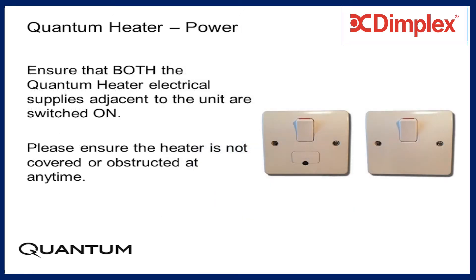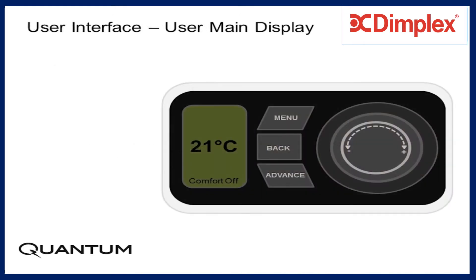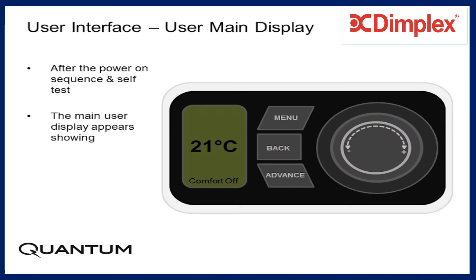Ensure that both the Quantum Heater electrical supplies adjacent to the unit are switched on. Please ensure the heater is not covered or obstructed at any time. After the power-on sequence and self-test have completed, the main user display appears, showing the current required room temperature and the current comfort status.